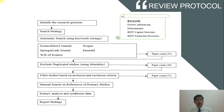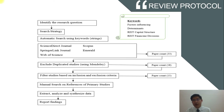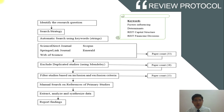Moving on to data collection, this is the review protocol used for the systematic review. The first step is to identify the research question, which is research question one. The keywords used are: factors influencing, determinants, REITs capital structure, and REITs financing decisions. Five databases were used. The initial paper count was 33. After excluding duplicated studies using Mendeley, 18 remained, and after applying inclusion and exclusion criteria, 13 papers were selected.